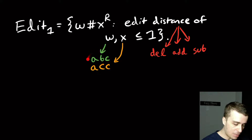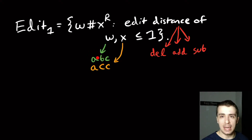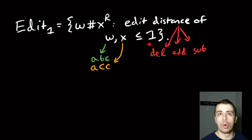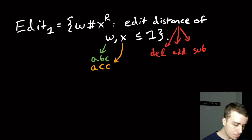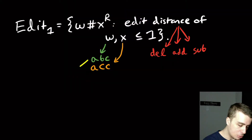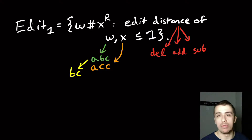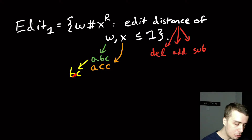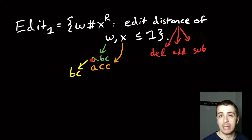For example, if we have 'abc', one thing we can do is substitute b for c — notice the rest is the same, because we're asking for at most one edit. You can generalize to any constant number, but here it's at most one. Another option is to delete one character to get 'bc'. So these two strings are within edit distance one of each other.